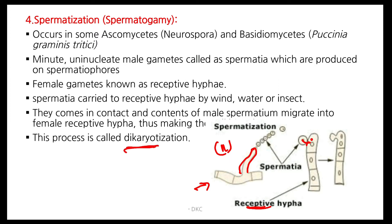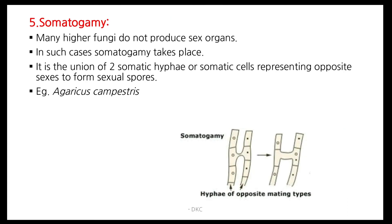Spermatization is present in some Ascomycetes and some Basidiomycetes. Somatogamy: many higher fungi do not produce any sex organs. In such cases, somatogamy takes place. It is the union of two somatic hyphae or somatic cells representing opposite sex to form sexual spores.